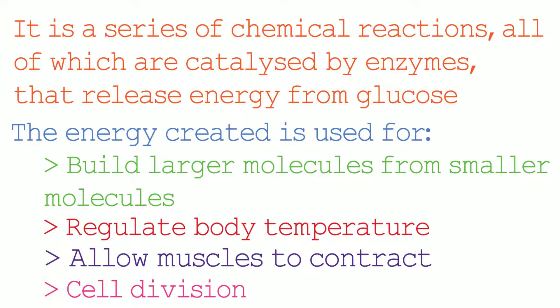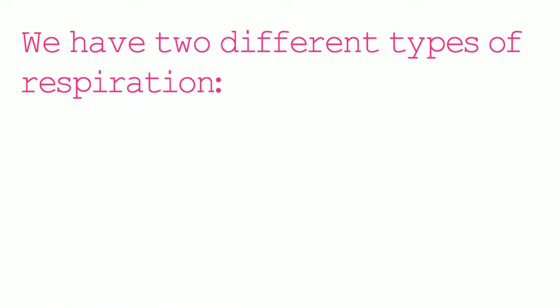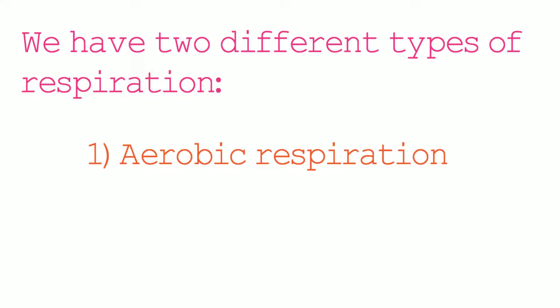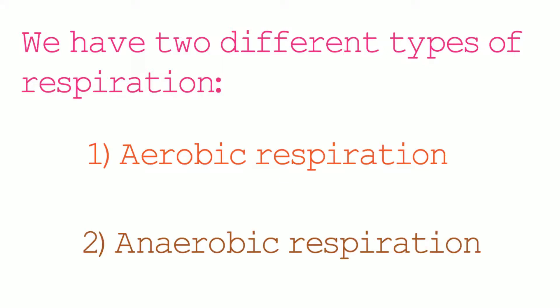Respiration occurs in all living cells, from single-celled organisms to more complex organisms. There are two different types of respiration: aerobic respiration and anaerobic respiration. However, we need to know that respiration is the chemical reaction that takes place in cells, and it is not us breathing. Breathing is the process of moving air into and out of our lungs to facilitate gas exchange.